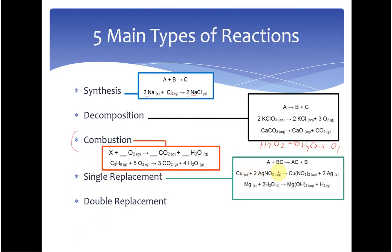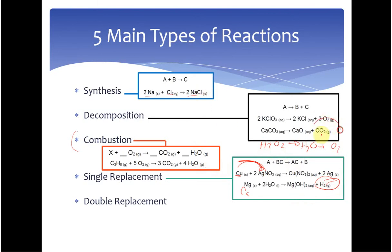Single replacement: here you have an element and a compound that react to produce a new element and a new compound. Something like this element comes in and replaces another element — for example, making copper go with the anion to form copper nitrate and silver metal. This is very similar to what you did in lab with copper chloride dihydrate and aluminum metal. You also witnessed single replacement when you added magnesium or calcium to water and produced calcium hydroxide or magnesium hydroxide and hydrogen gas.